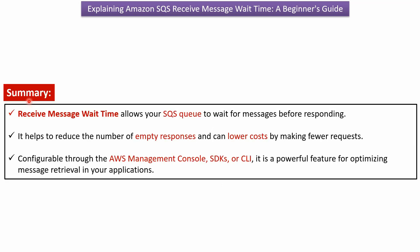In summary, receive message wait time allows your SQS queue to wait for messages before responding. It helps reduce the number of empty responses, which can lower cost by making fewer requests. You can configure receive message wait time through the AWS Management Console, SDK, or CLI. It is a powerful feature for optimizing message retrieval in your applications.